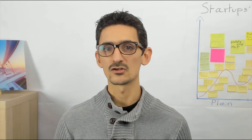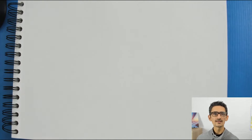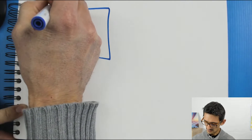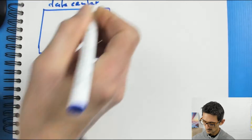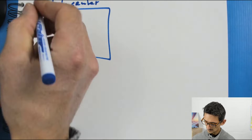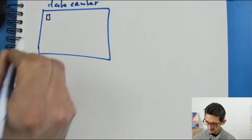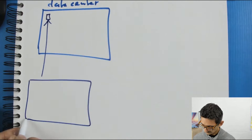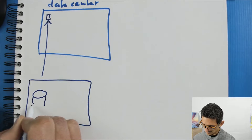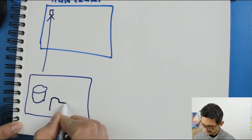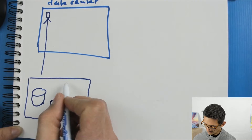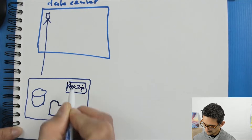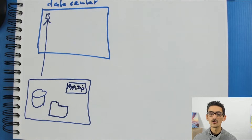Let's make a quick explanation. When we use a classical server, basically you are in a data center. This is a data center — a server. You will rent one server here, and in this server, which belongs to you, you will put some database, some files for your application, as well as your application. Let's say that we put everything in a zip file — App.zip. That's everything that will be on your server.